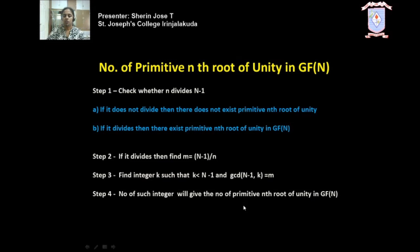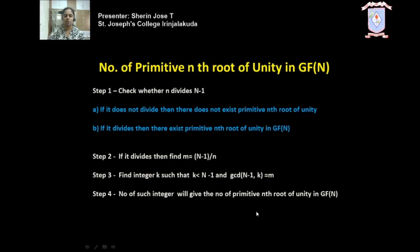It is as easy as that. First find m, then find all integers less than n minus 1 whose gcd with n minus 1 equals m, and count them — that count gives the number of primitive nth roots of unity in GF(n). Let us check out one or two problems. The first problem: find the number of primitive nth roots of unity in GF(9).